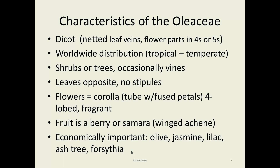Characteristics: these have netted leaf venation because they're dicots. They're worldwide in distribution, although probably more in the Middle East and Eastern Asia areas. They are usually shrubs or trees. The leaves are opposite, without stipules. The flowers form a corolla, which is a tube of the petals fused together. They often have the sepals below the petals fused together also, which would be a calyx. They're frequently very fragrant. The fruit is a berry or a samara.